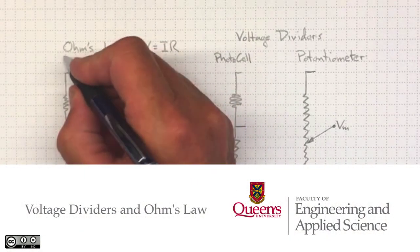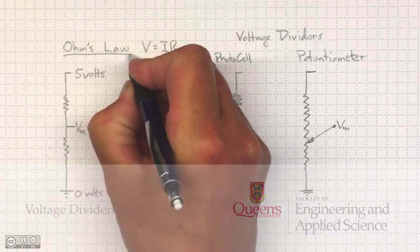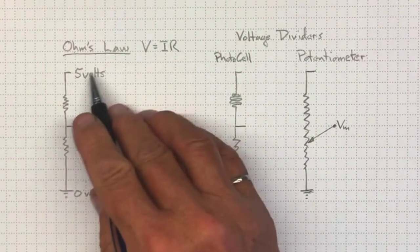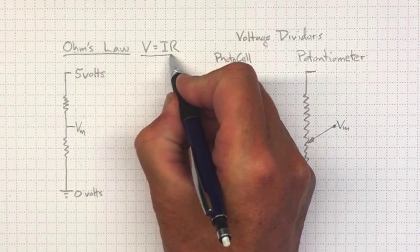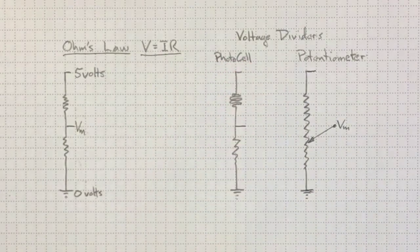Let's just do a little review of Ohm's law, which governs the flow of current through resistances under an applied voltage. You'll remember that the voltage is equal to the product of the current and the resistance.